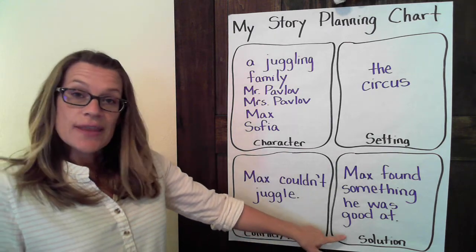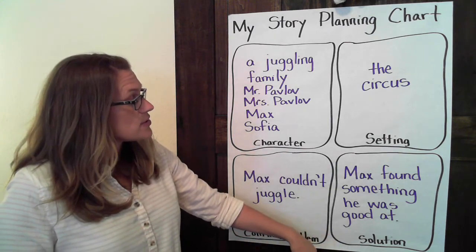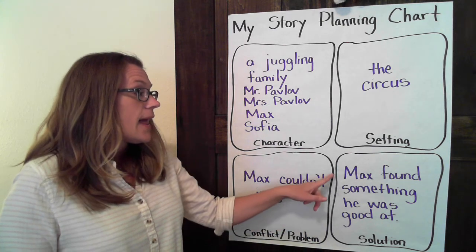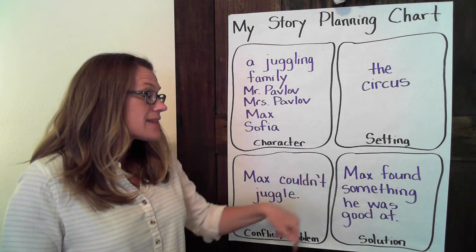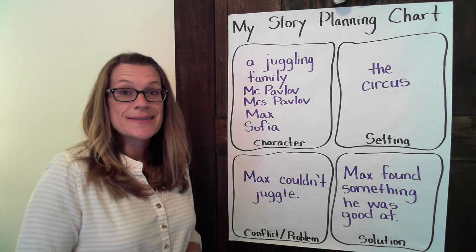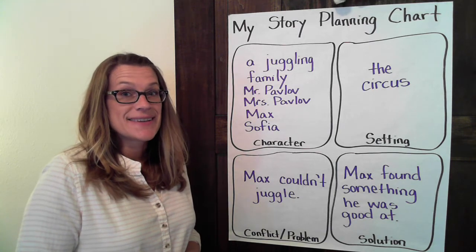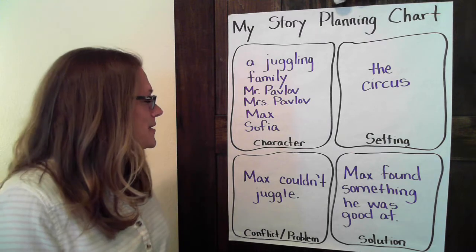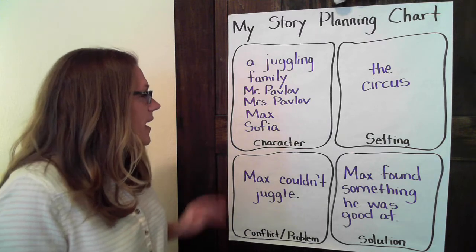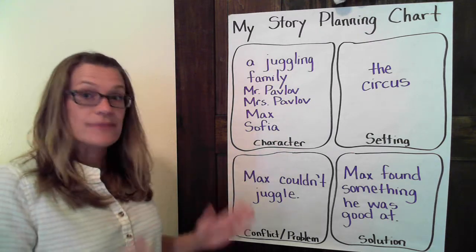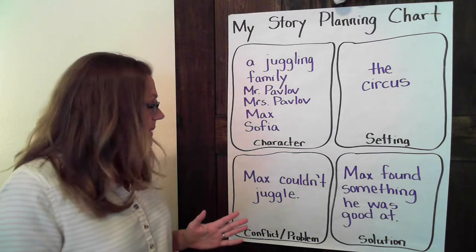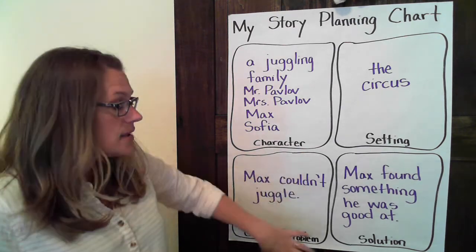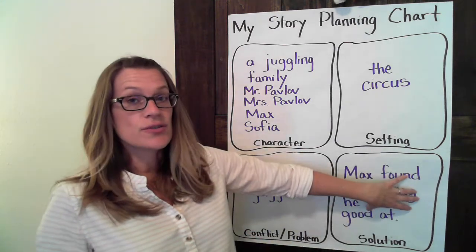The solution I thought about for Max not being able to juggle is that Max found something that he was good at. It's going to be interesting how that develops as I write my story. To help me remember, we need to figure out a way to get from the problem to the solution.